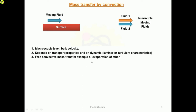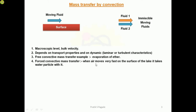An example of free convective mass transfer is evaporation of ether — ether evaporates at body temperature and transfers to the ambient air. An example of forced convective mass transfer is when air moves very fast on the surface of a lake and takes water particles with it — this is also a transfer of mass, that is, water particles.